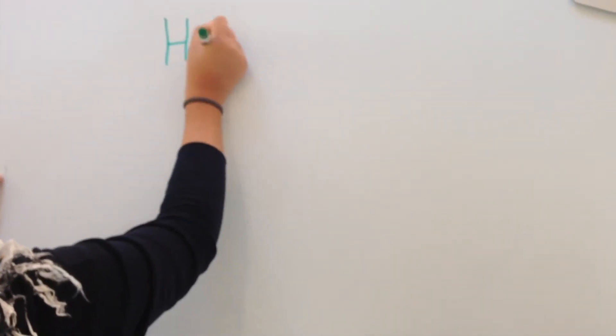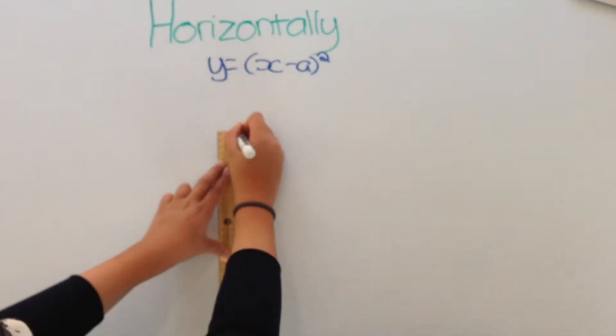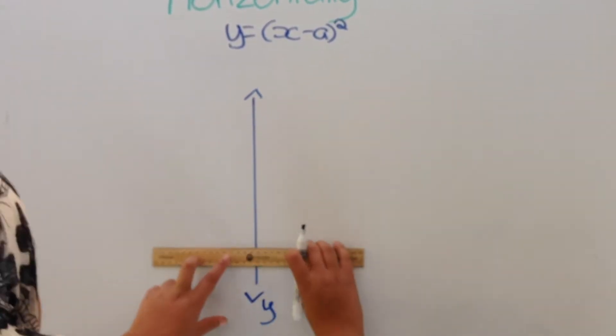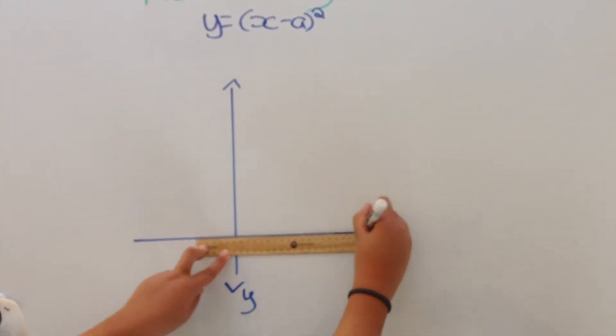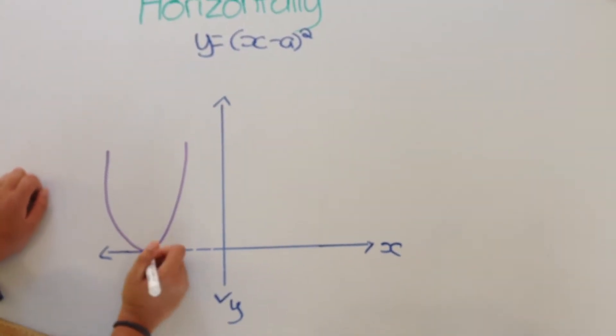To move a parabola horizontally, we use the formula x equals a squared. This means the vertex is at the coordinates a comma zero. If a is positive, we move the parabola left, and if a is negative, we move the parabola right.